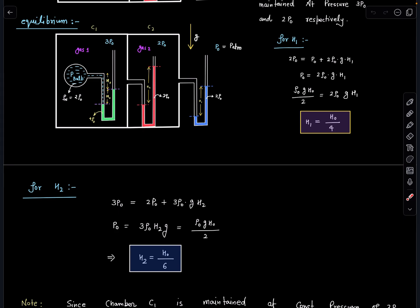And if I equate it with rho naught g h naught by 2, I am going to get h2 equals h naught by 6. I hope this part is clear to you.